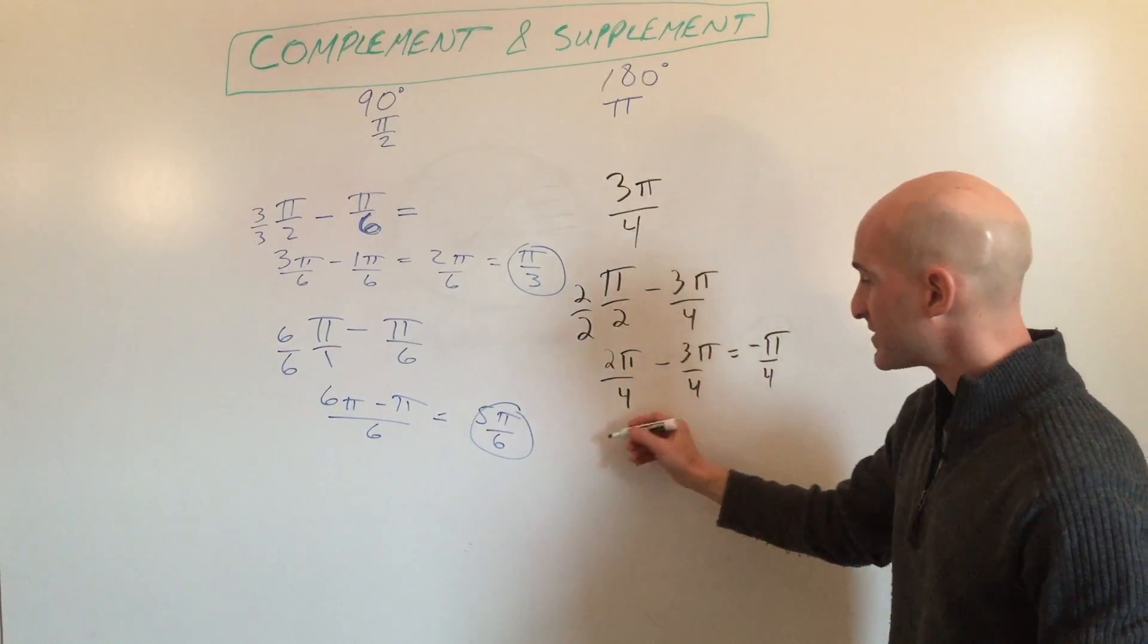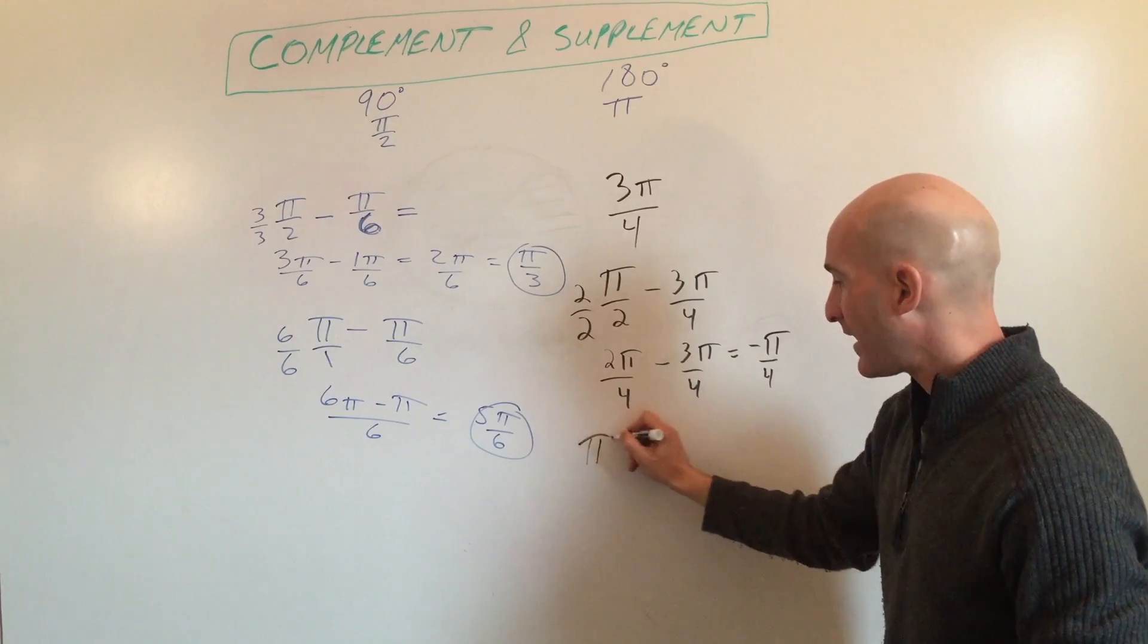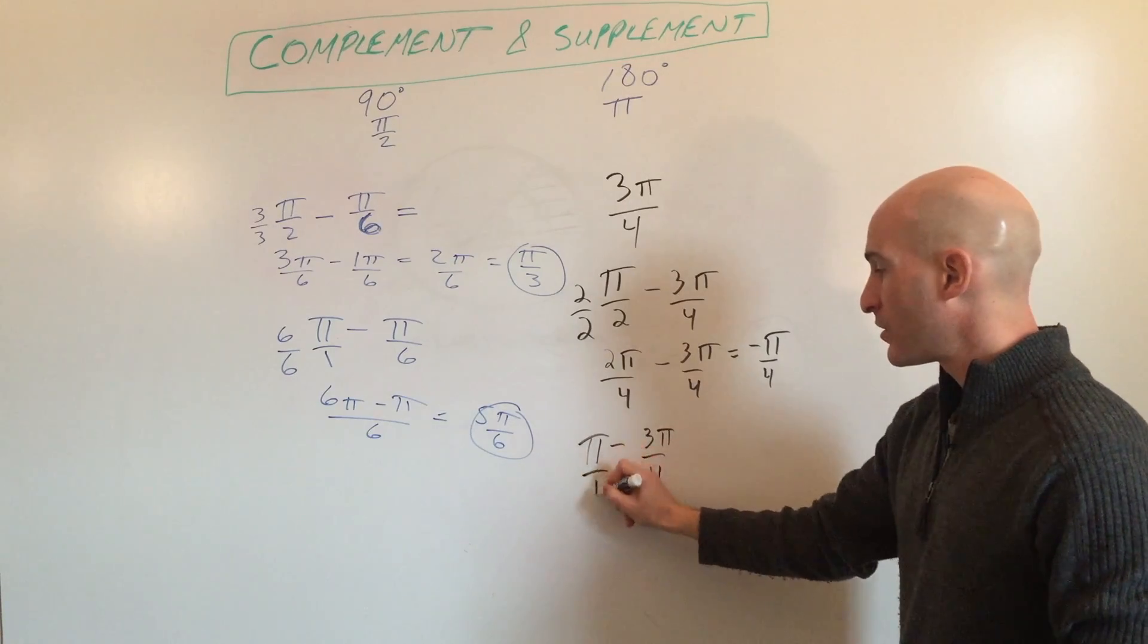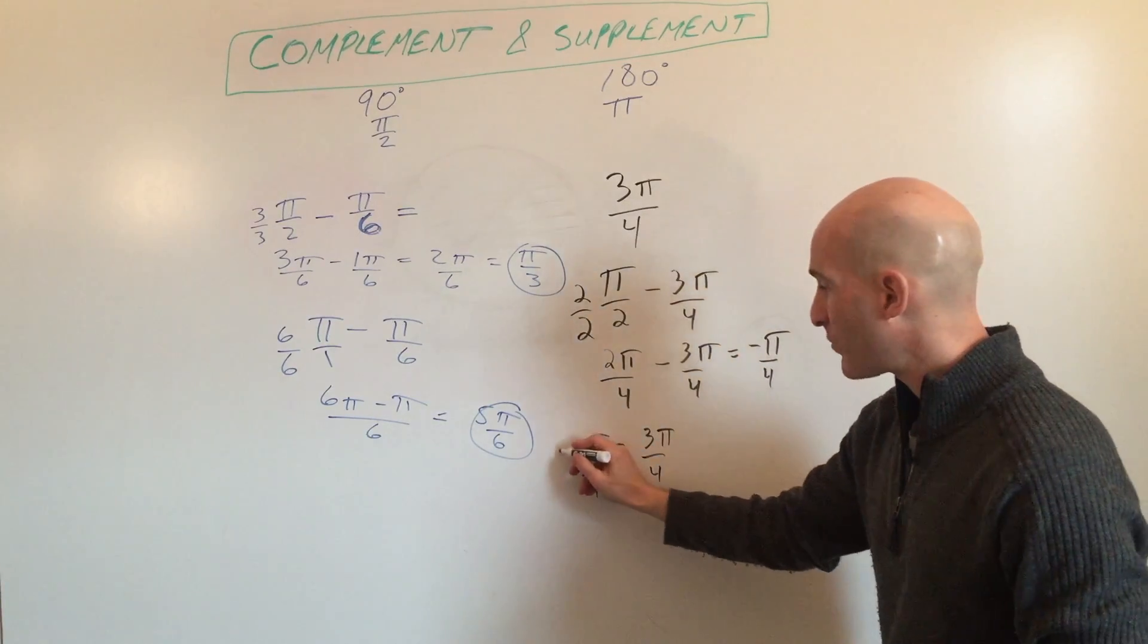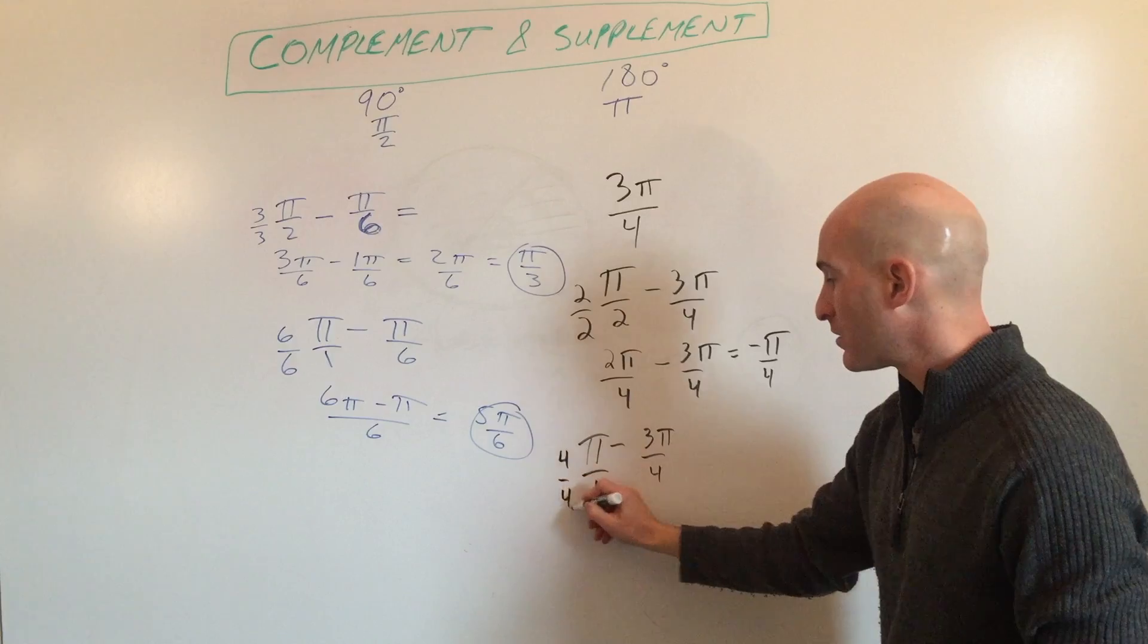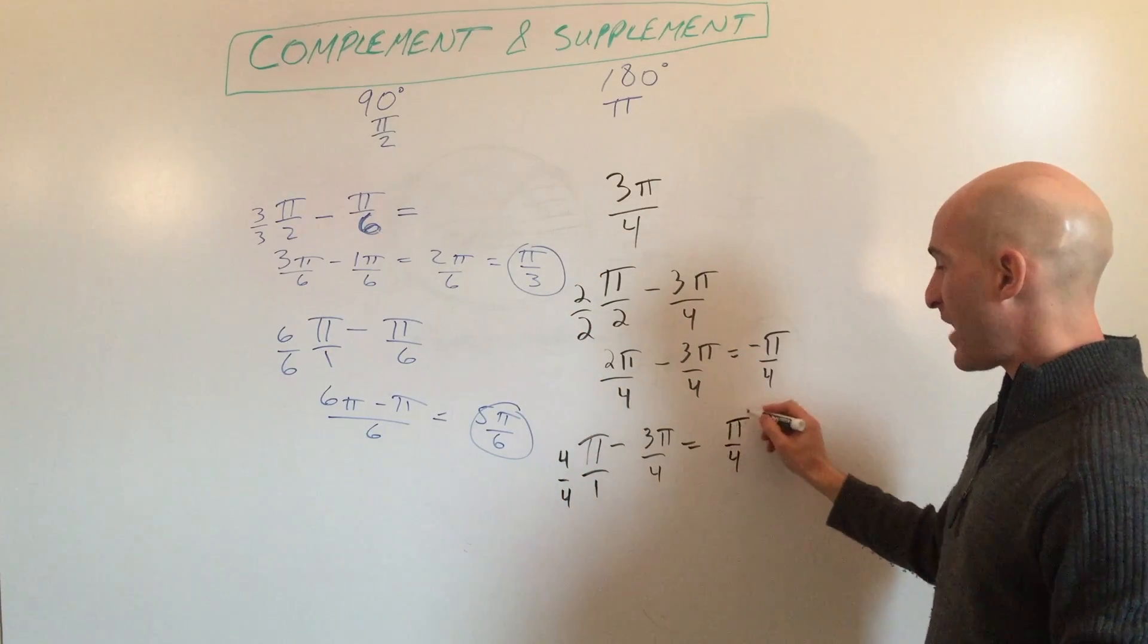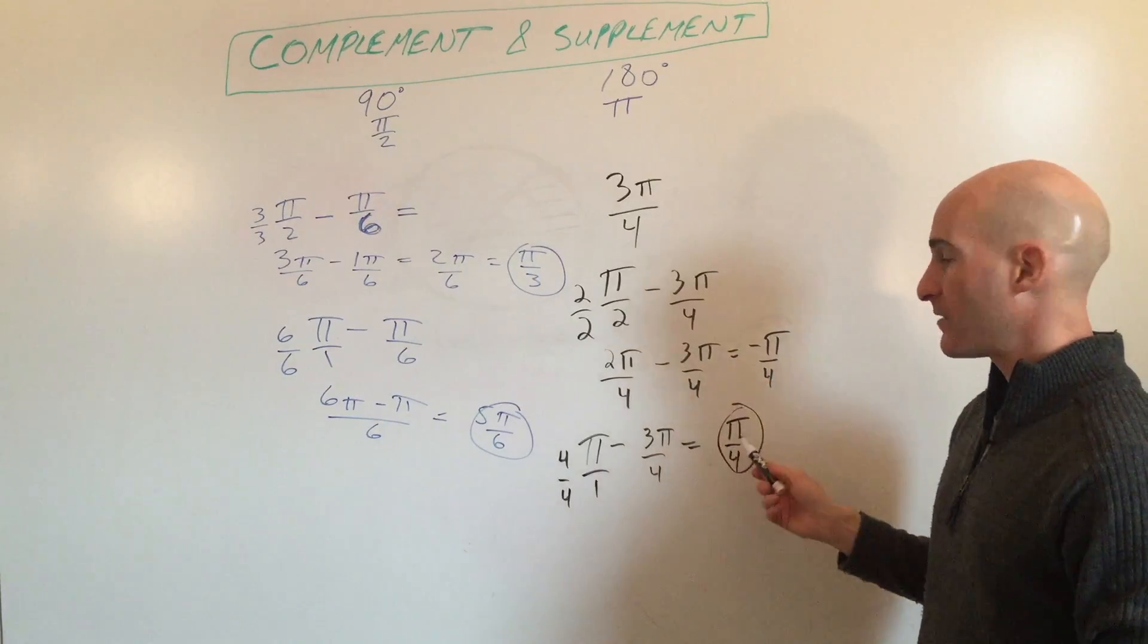If we want to find the supplement, same idea. We do π minus 3π over 4. You want to get common denominators, so I'm going to multiply by 4 over 4. So that comes out to 1π over 4. This is positive, so there is a supplement, π over 4.